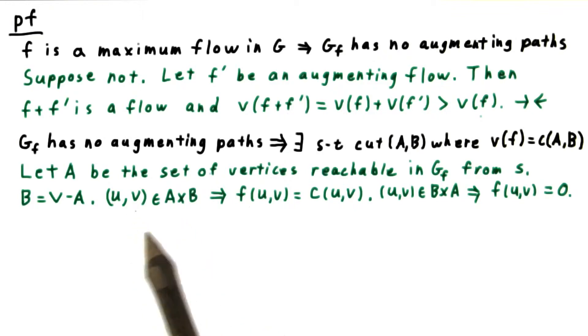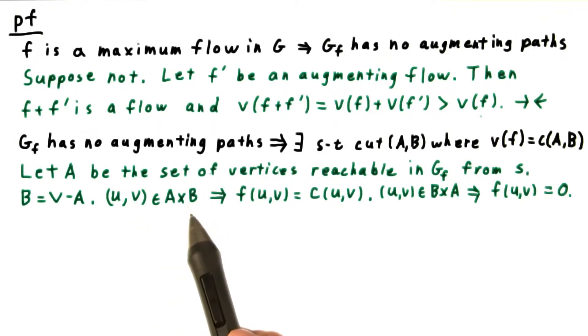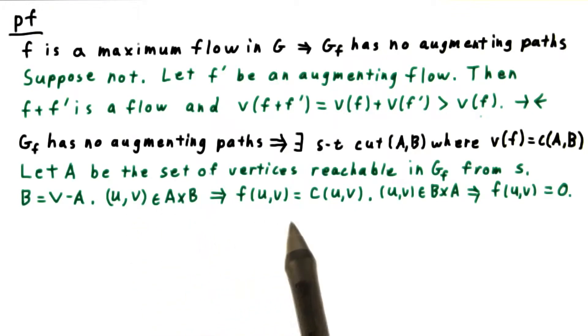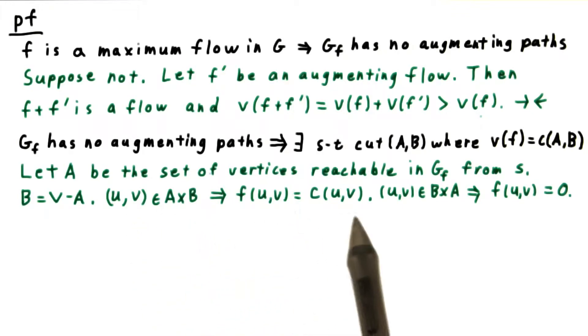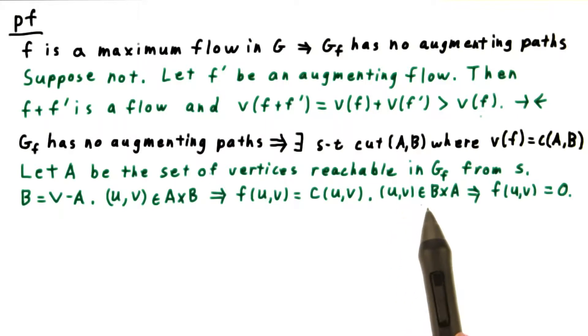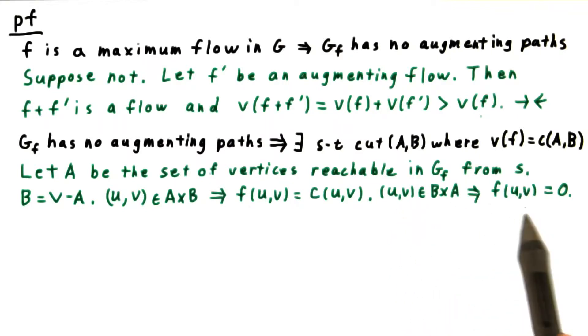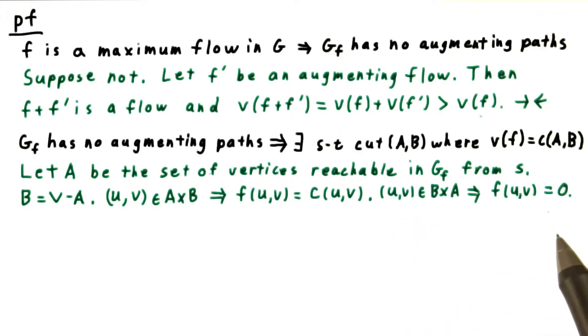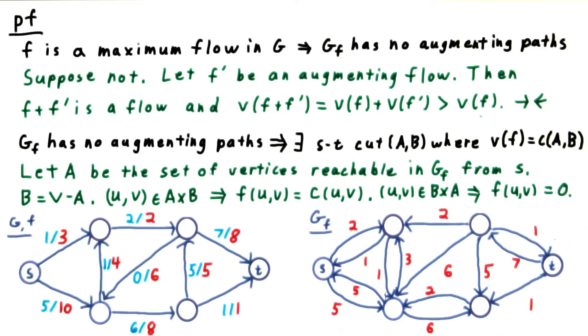We have concluded that any forward edge from A to B must be saturated, and any backwards edge from B to A must be unused. Before going any further, let's illustrate this with an example.